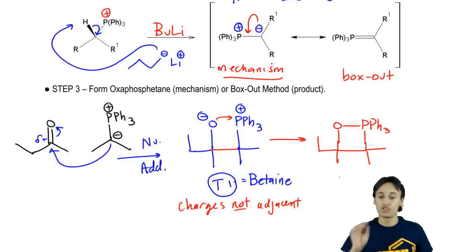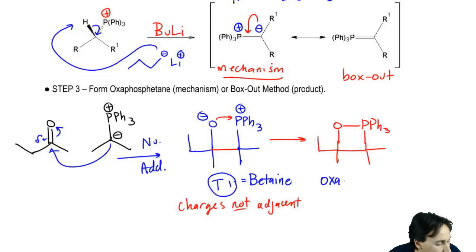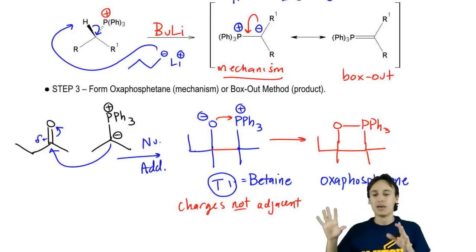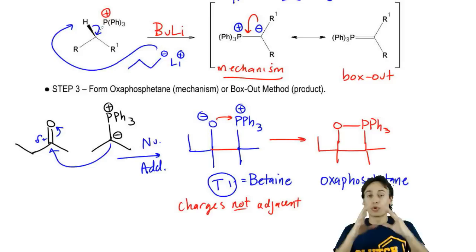This intermediate has another name. This intermediate – notice there's no charges, so it's not a betaine anymore. This is an oxaphosphatane. I'm pretty sure I'm spelling that right. I might be like one vowel off, guys. Spelling is not my forte, unfortunately. Orgo is. I'm pretty sure that's right. Oxaphosphatane. It's this four-membered intermediate.